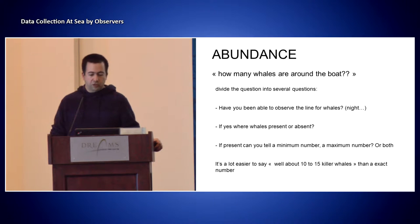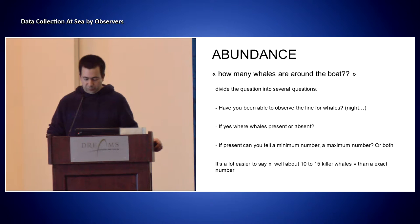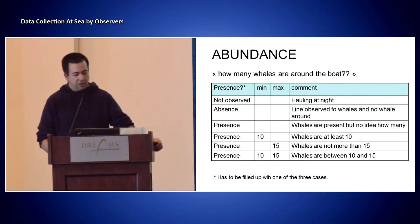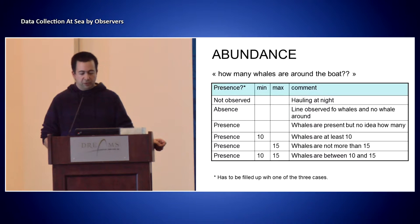So we changed the question and divided it into several sub-questions. First: have you been able to observe the whales? Maybe it wasn't possible because you didn't have the time, conditions weren't good enough, or it was at night. If you were able to observe, were they present or absent? And if present, can you give a minimum number, a maximum, or both? It's a lot easier to say 'I think it was between 10 and 15 killer whales' than giving an exact number. So observers can record present, absent, or not observed — and if present, provide a min, max, or range.